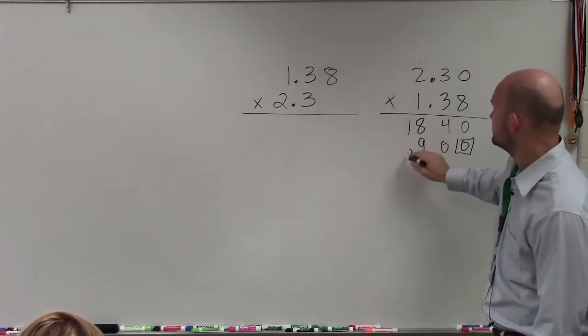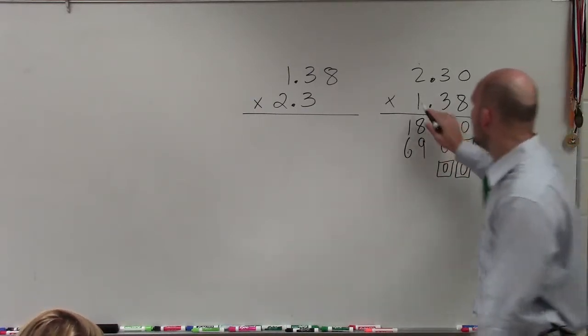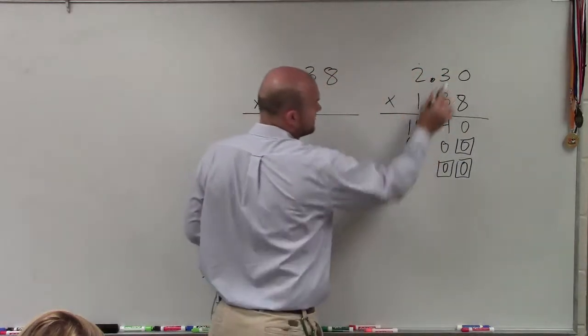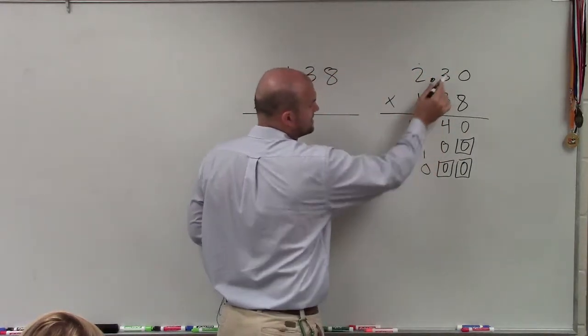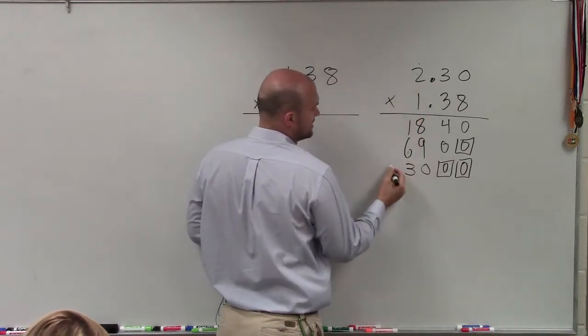3 times 2 is 6. Now bring in two place values. And work to our last digit. 1 times 0 is 0. 1 times 3 is 3. And 1 times 2 is 2.